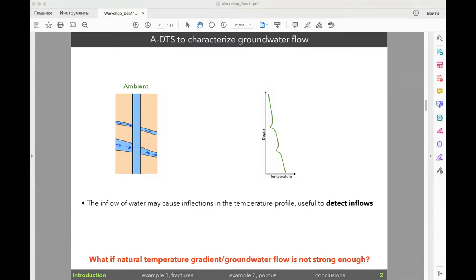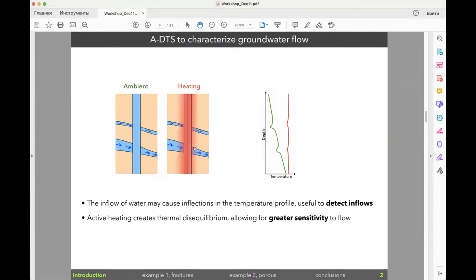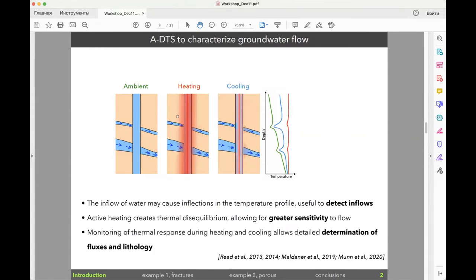In this case we can use active methods. Can you still hear me? Okay, so in this case we use active methods. It means that we basically change the temperature of the borehole, simply by heating the cable inside the borehole or by injecting water of known temperature to increase the sensitivity to groundwater flow. Then we measure the temperatures in the borehole during the heating period and then during the cooling period. Obviously, if we have some flowing zones, the temperature will recover faster just in front of this cooling zone. It will recover with some velocity corresponding to the diffusive process if we don't have any flowing zones.